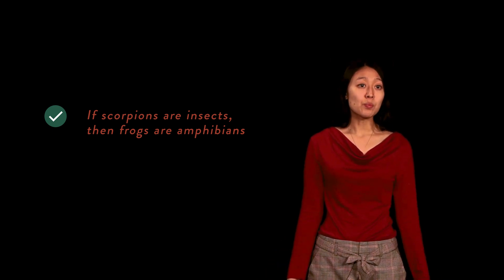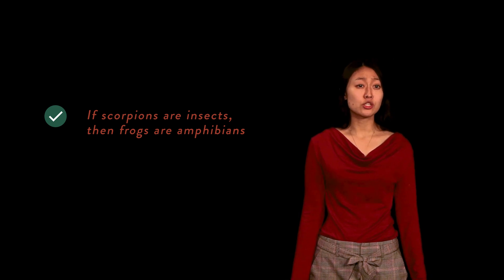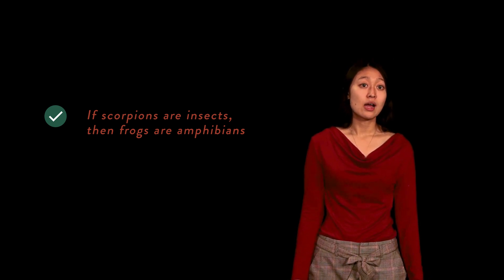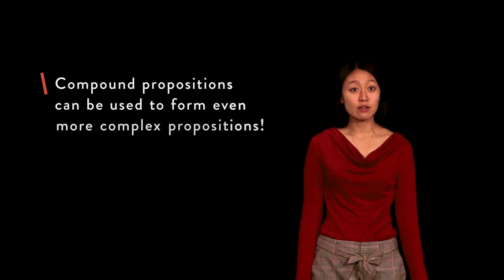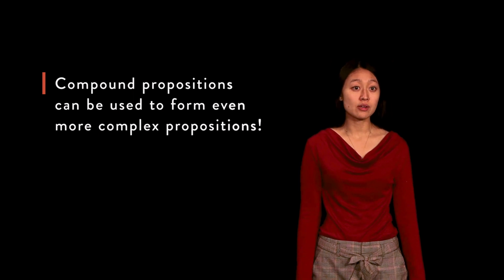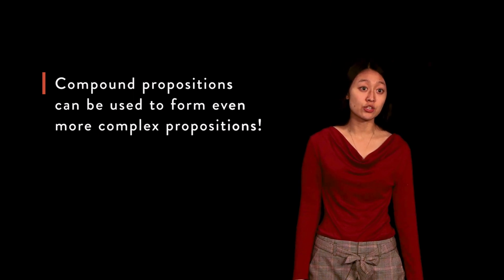Specifically, if scorpions were in actuality insects, then this proposition could not be true without 'frogs are amphibians' being true — and we know the latter to be true. It should be understood that as compound propositions are formed through the combination of two simpler propositions, they themselves can be used to form more complex compound propositions.